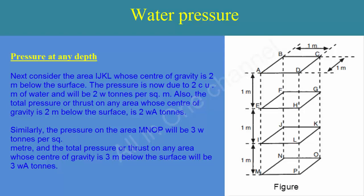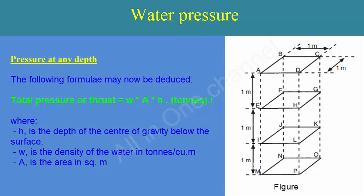Similarly, the pressure on the surface will be 3W tons per square meter, and the total pressure or thrust on any area whose center of gravity is 3 meters below the surface will be 3W·A tons. The following formulae may now be deduced.